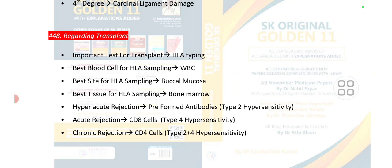Point number 448 is regarding transplant. The important test for transplant is HLA typing. The best blood cell for HLA sampling is WBC. The best site for HLA sampling is buccal mucosa. The best tissue for HLA sampling is bone marrow. Hyperacute reaction is due to preformed antibodies — it is a type 2 hypersensitivity.